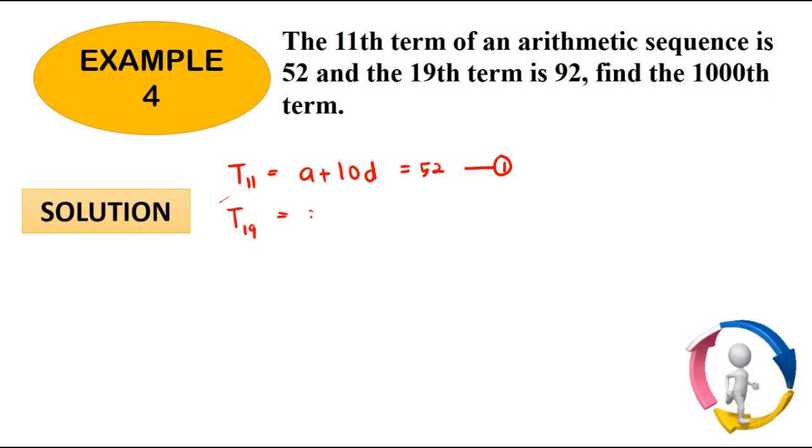T19 given to you is 92, so this is our second equation. Because in order to find the 1000th term T1000, we should find what is our a, what is our d. So in order to find this we need to solve these two equations here. So I might want to use the elimination to solve a and d.